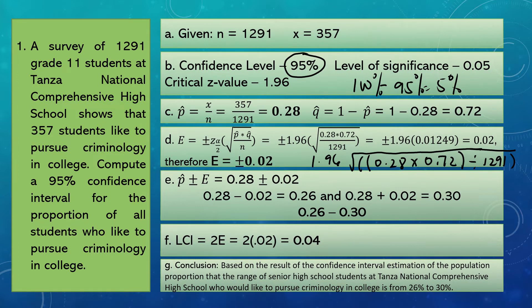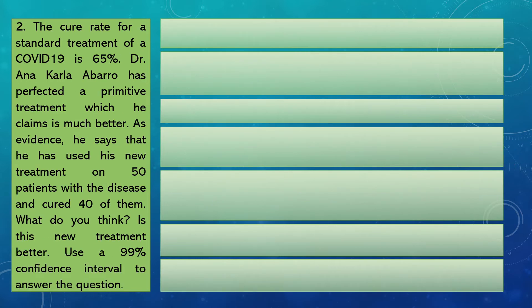Let's try another example. The cure rate for the standard treatment of COVID-19 is 65%. Dr. Ana Carla Avaro has perfected a primitive treatment, which he claims is much better. As evidence, he used his new treatment on 50 patients and cured 40 of them. Is this new treatment better? Use a 99% confidence interval to answer the question. From the problem, X equals 40 and N equals 50.